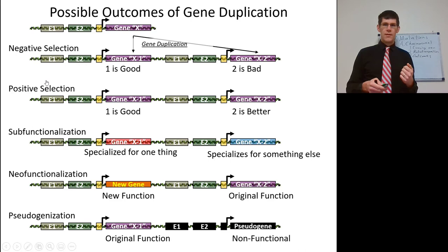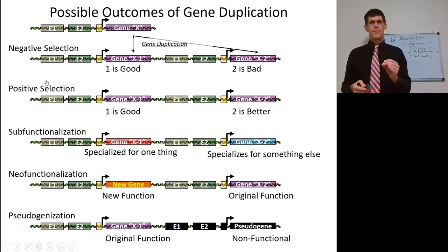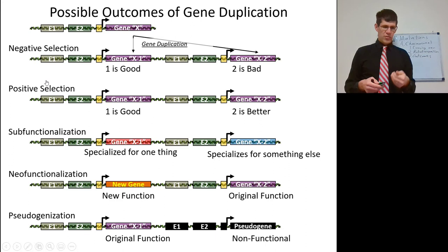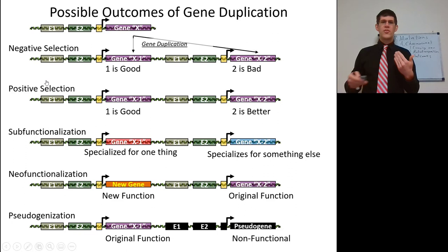Then there's pseudogenization. You mutate the transcription factors or the promoter, and now you have a non-functional gene — or it may have a premature stop codon. It's called a pseudogene because it still looks very much like a gene. To someone sequencing the genome, it looks like it has promoters, transcription factors, a TATA box, and a poly-A tail — but it doesn't work. It's not functional, so we call it a pseudogene.